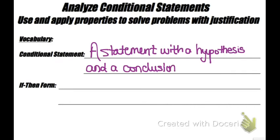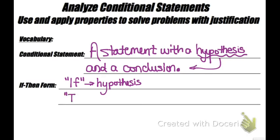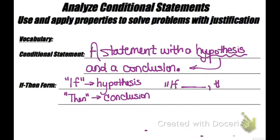The hypothesis will result in the conclusion happening. In if-then form, the 'if' part of the statement is the hypothesis and the 'then' part is the conclusion. So if something happens, then something else will happen — that's your hypothesis and conclusion.